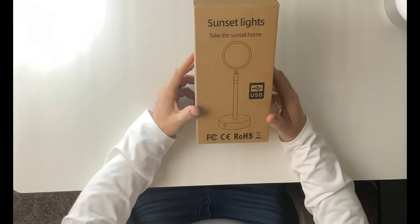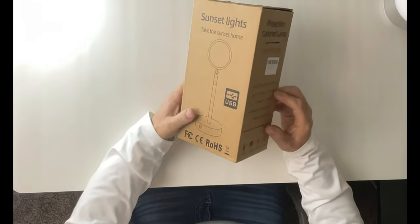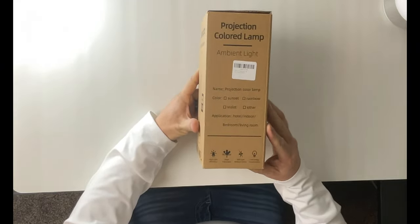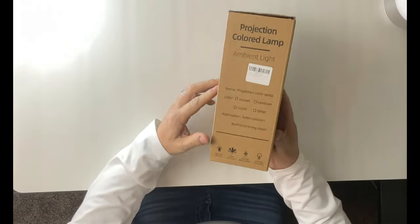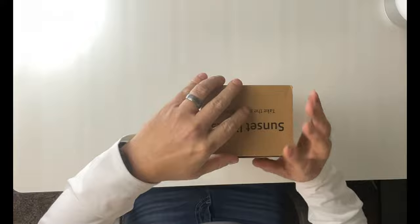Okay guys, here's the lamp and this is from Sunset Lights. It says take the sunset home. It just comes in this box just like this. It's an ambient light. It's got different colors and it is USB. So we're just going to do the unboxing.